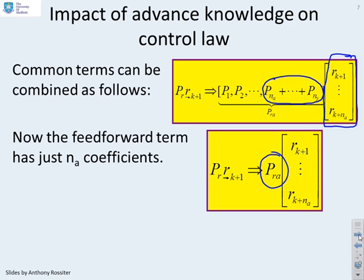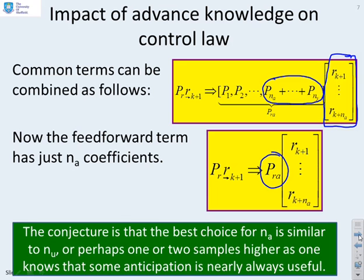Our conjecture is that the best choice for na is similar to nu, because if it's much bigger than nu, it means our degrees of freedom in the input trajectory do not match where our possible target changes are happening. But if those two are similar numbers, then there's an overlap and we should get a sensible answer. You might allow na to be one or two samples higher, because you know some anticipation is useful, but not too much.